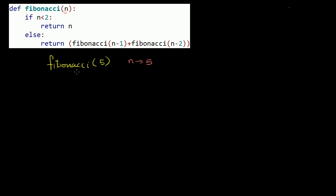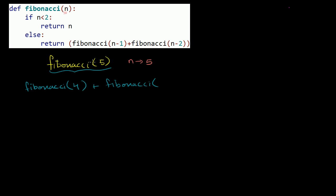When I call this, it's essentially going to return — since n was 5 — Fibonacci of 4 plus Fibonacci of 3. Because n minus 1 is 4, and n minus 2 is 3. These are just more function calls, so now we're going to go again, but now n is not 5 — it's now 4 and 3.